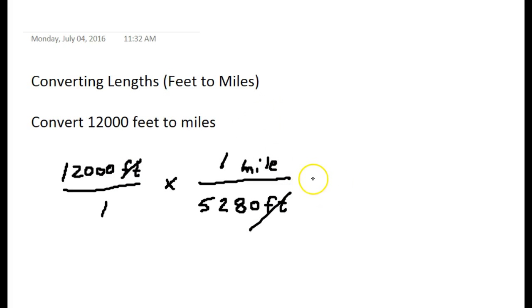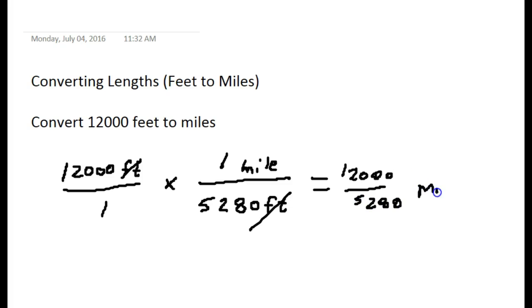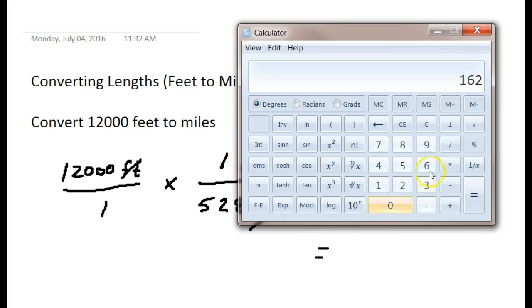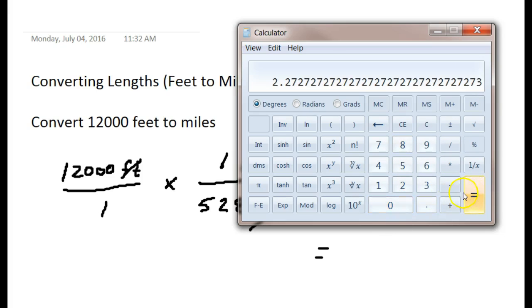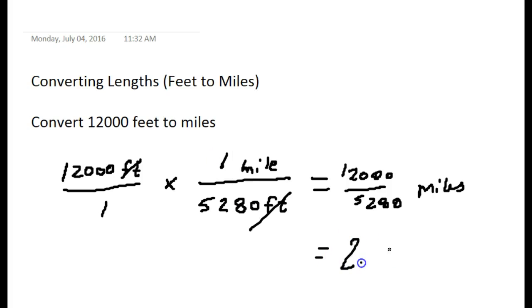After canceling the feet, I'm left with 12,000 divided by 5,280 miles. On my calculator: 12,000 divided by 5,280 equals approximately 2.27 miles — rounding to two decimal places. So 12,000 feet equals 2.27 miles.